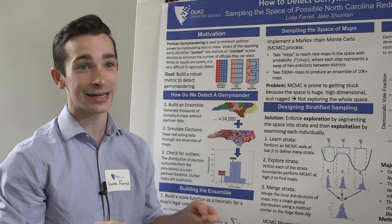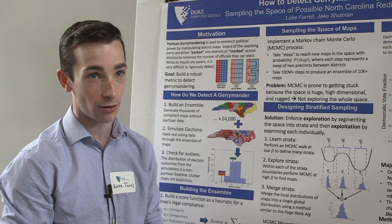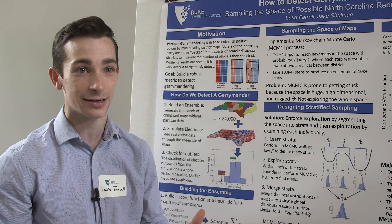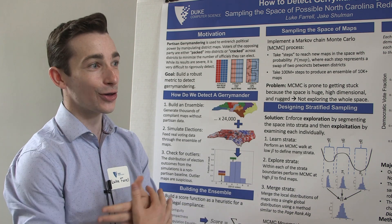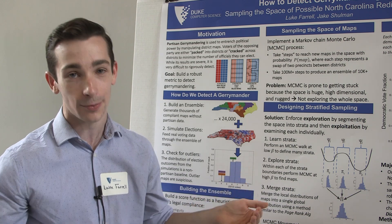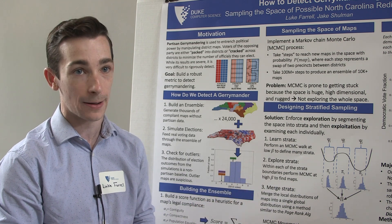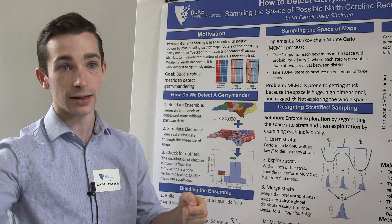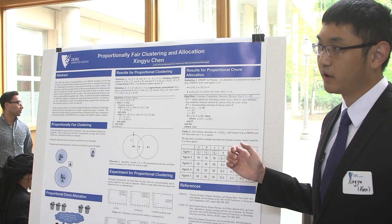There are 13 to the 300 possible redistrictings of North Carolina. For context, there are 10 to the 80 atoms in the universe, so there are just a vast, intractable number of maps to look at. So how do we look through that haystack and find all the needles in a representative way?